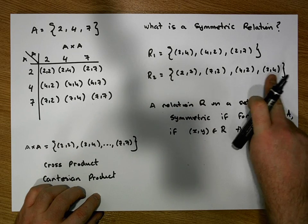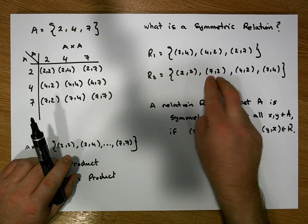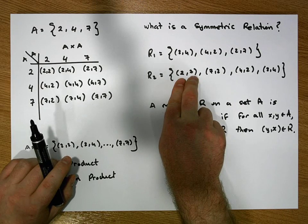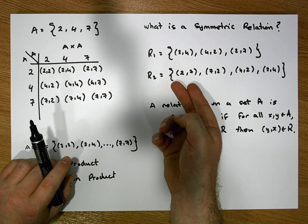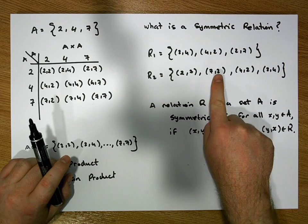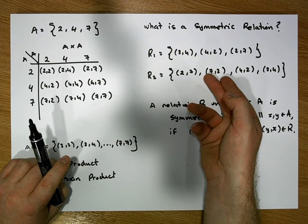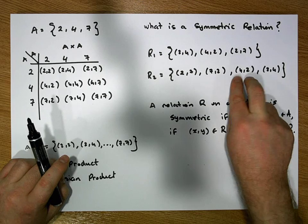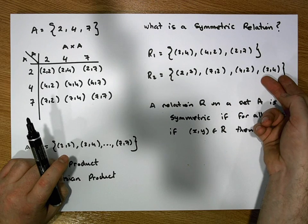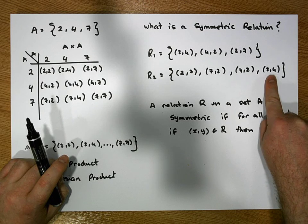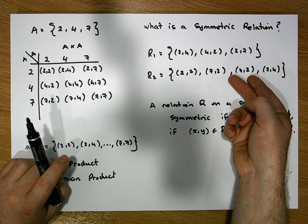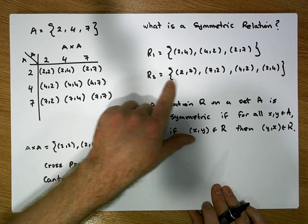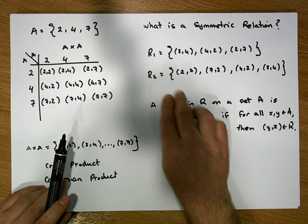What about R2? R2 contains four ordered pairs. If it's symmetric, then when we flip each ordered pair, we expect to find the flipped pair in R2. Take (2,7) — flipping gives (7,2), and (7,2) is in R2. Take (7,2) — flipping gives (2,7), and (2,7) is in R2. Take (4,2) — flipping gives (2,4), and (2,4) is in R2. Finally, take (2,4) — flipping gives (4,2), and (4,2) is in R2. So R2 is symmetric, as all symmetric couples are contained in R2.